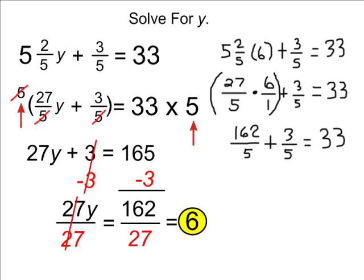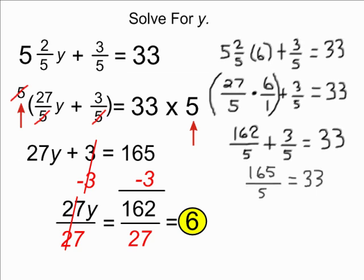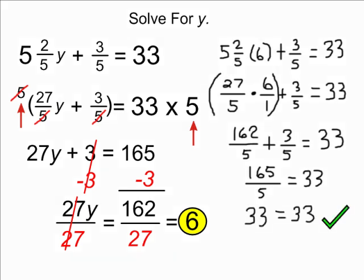Next, we are going to add 162 fifths to 3 fifths. After doing that, we come up with an improper fraction of 165 over 5. After simplifying 165 over 5 by taking the numerator and dividing it by the denominator, we would come up with exactly 33, so our answer of 6 does indeed check out.